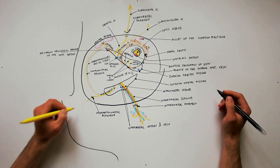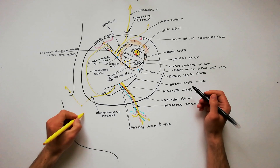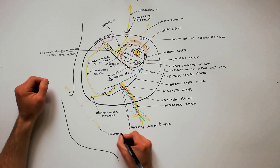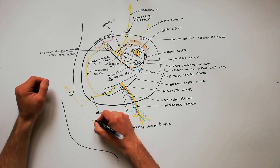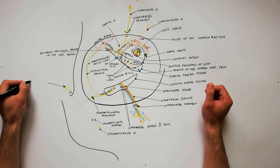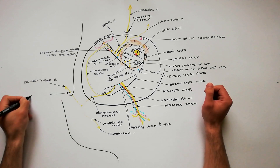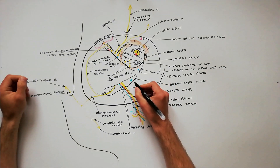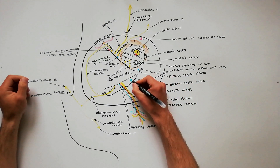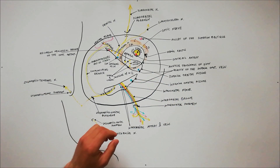The zygomatic nerve, after entering through the zygomatic orbital foramina, bifurcates within the zygomatic bone. One bifurcation is called the zygomaticofacial nerve, which appears through the zygomaticofacial foramen. The other bifurcation is called the zygomaticotemporal nerve, which appears through the zygomaticotemporal foramen. Finally, we will indicate the presence of a second branch from the inferior ophthalmic vein passing through the medial part of the inferior orbital fissure.